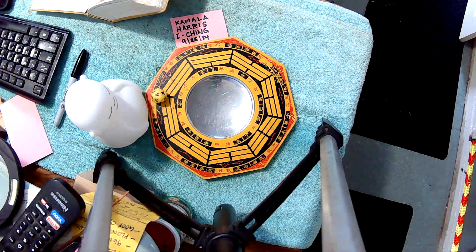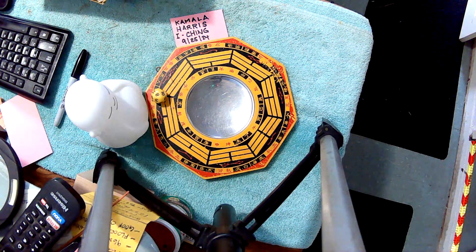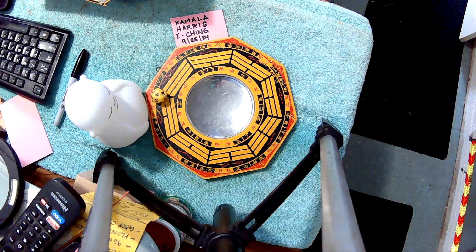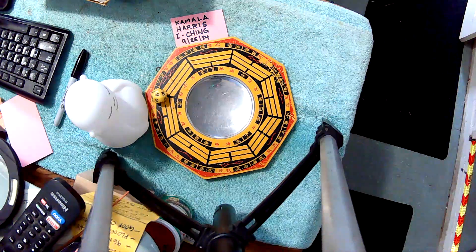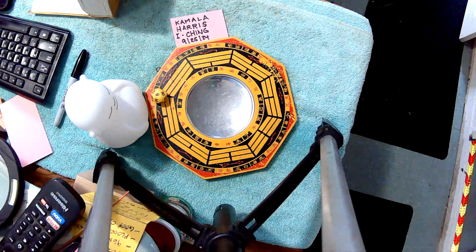So the bottom lower trigram is Ken, and the upper trigram is Chen. So her hexagram is number 33.